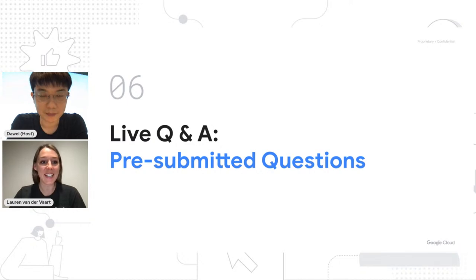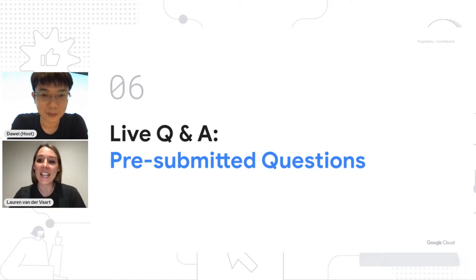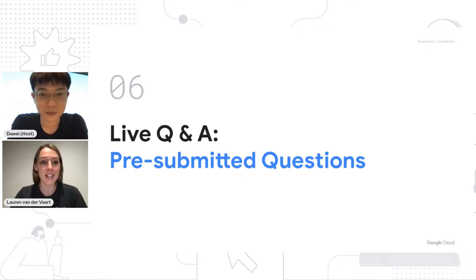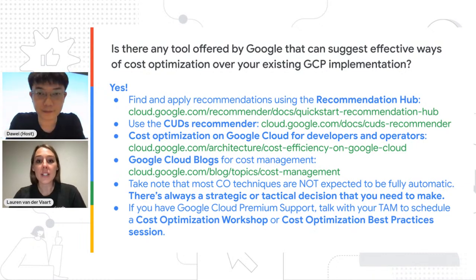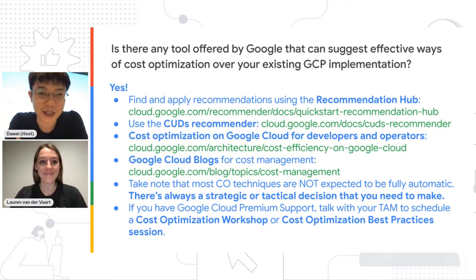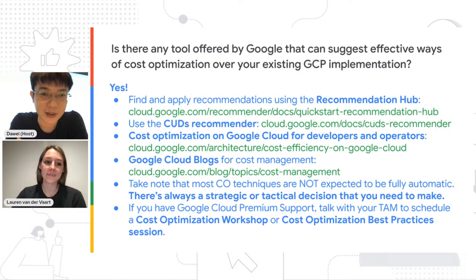Thank you for that presentation. The first pre-submitted question is: is there any tool offered by Google that can suggest effective ways of cost optimization over your existing GCP implementation? The simple answer is yes — Recommendation Hub is the tool you're looking for. It includes features like CUD recommendations, idle VM recommendations, and right-sizing recommendations. A Quick Start guide for Recommendation Hub in the GCP console will walk you through the tool in three to five minutes.